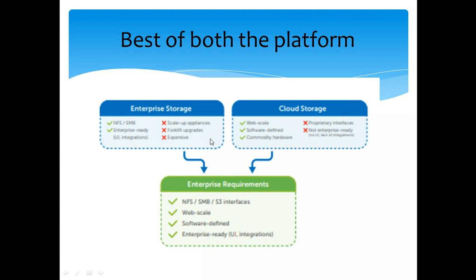Cohesity is designed as the best of both platforms — on-premises and cloud. For organizations that are fully on-prem and need NFS, SMB, or enterprise-ready storage, Cohesity delivers that. For organizations moving to the cloud, it is web-scale, scalable, software-defined, and runs on commodity hardware — no specialized custom hardware required. This makes it enterprise-recommended and software-defined, suitable for wherever your organization is on its cloud journey.